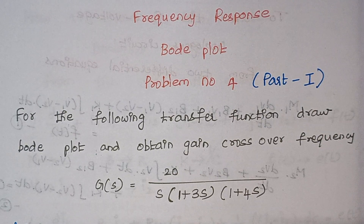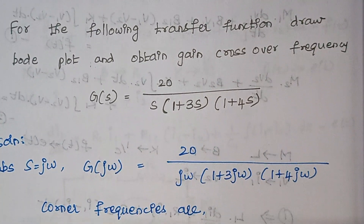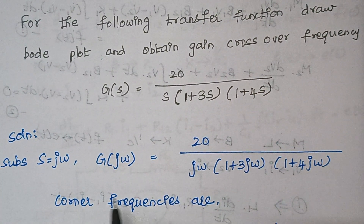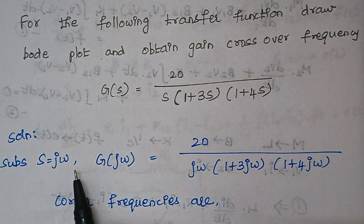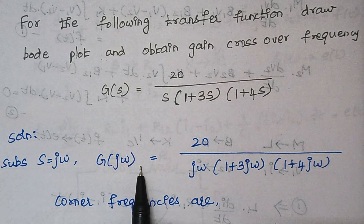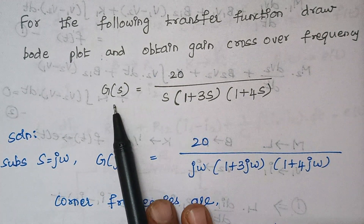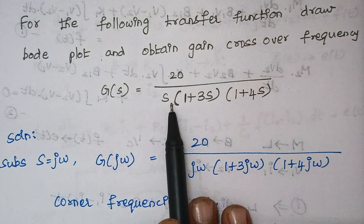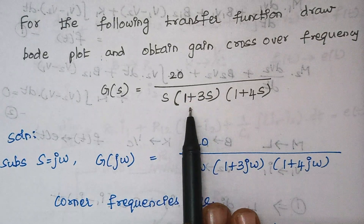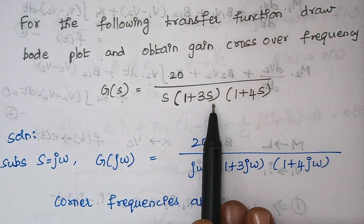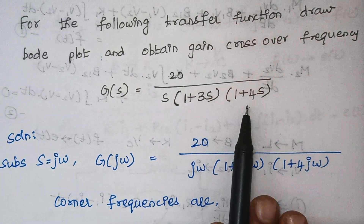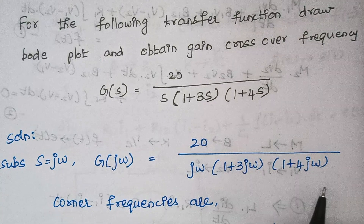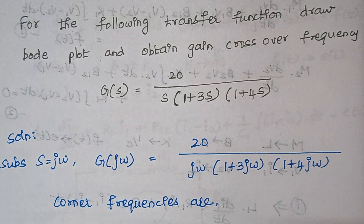The first step is we have to substitute the value of s as jω. So when you substitute here, G(jω) is equal to 20 divided by jω times (1 + 3jω) times (1 + 4jω).